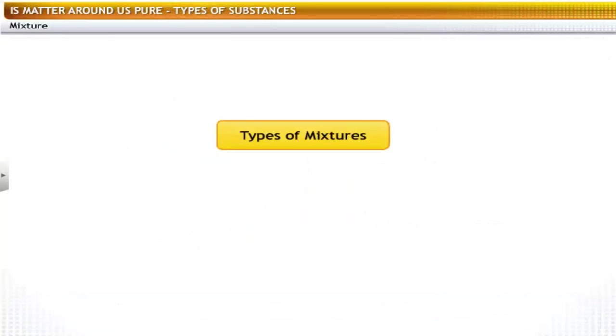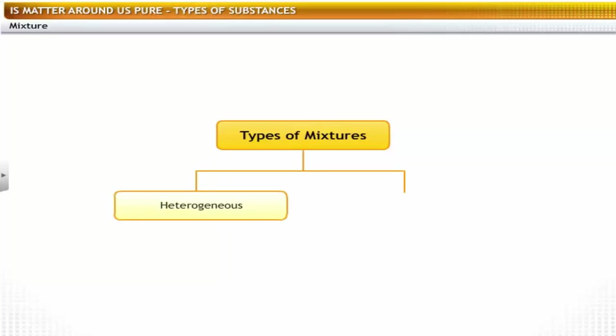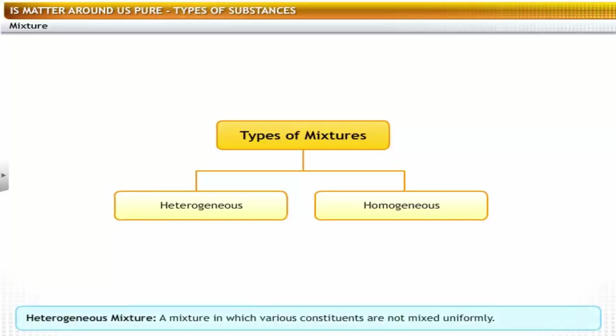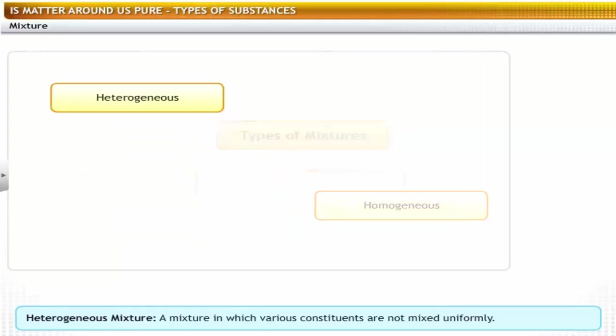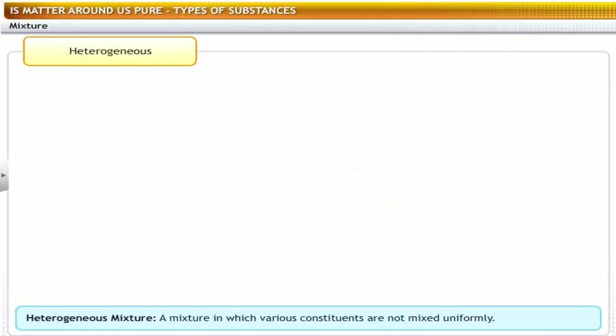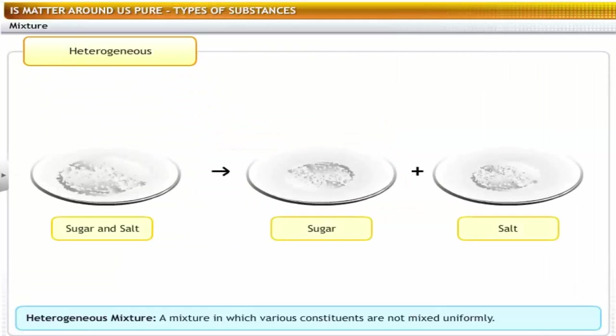Based on the distribution of the particles in the mixture, there are two types of mixtures: heterogeneous and homogeneous. A mixture that is not uniform throughout is called a heterogeneous mixture. For example, a mixture of sugar and salt is a heterogeneous mixture because the sugar and salt particles can be segregated based on their color and size.